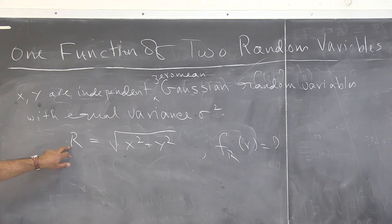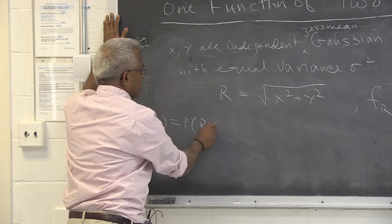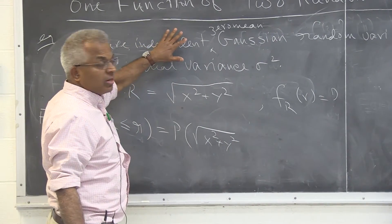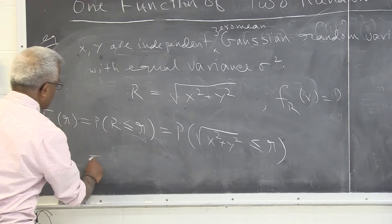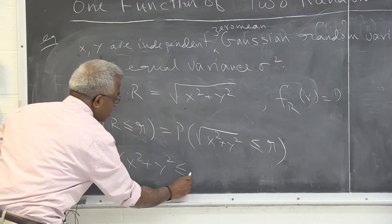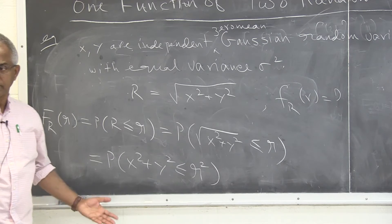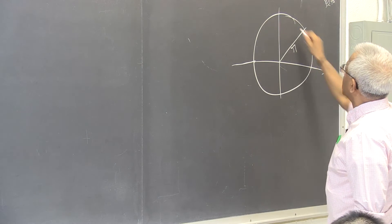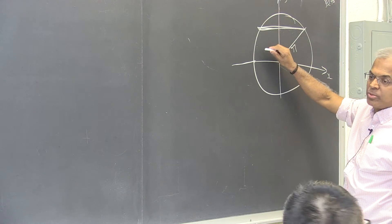We start by finding the CDF: F_r(r) = P(r ≤ r), where r = √(x²+y²). This equals the probability that x squared plus y squared is less than or equal to r squared. The region x² + y² ≤ r² is a circle of radius r in the x-y plane, so we need to integrate the joint density over the interior of that circle.